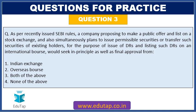Next question: as per recently issued SEBI rules, a company proposing to make a public offer and list on a stock exchange, and also simultaneously planning to issue permissible securities or transfer such securities of existing holders for the purpose of issuance of depository receipts and listing such depository receipts on an international board, would seek in-principle as well as final approval from: (A) Indian exchange; (B) overseas boards; (C) both of the above; or (D) none of the above.